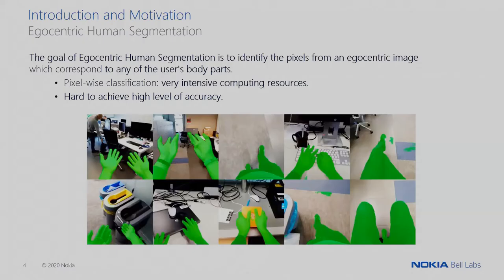We also need to define what egocentric human segmentation is. What we want to achieve when we apply egocentric human segmentation algorithms is to identify which pixels from an egocentric image correspond to any of the user's body parts. An egocentric image is the kind of picture taken from the user's point of view, and what we try to segment is the user's own body parts.